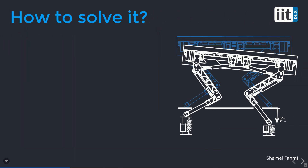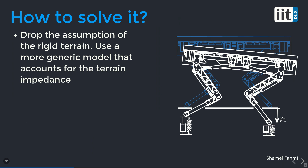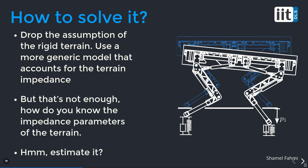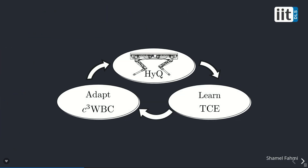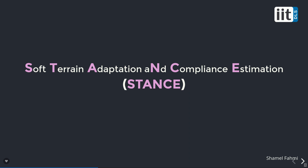So how do we solve these problems? First, we drop the assumption of rigid terrain and use a more generic model that can handle both rigid and soft terrain. But if we do that, we need to perceive the terrain parameters — we need to tell the robot which type of terrain it is walking over. So we estimate the terrain impedance parameters. We reformulate our standard whole body controller to account for a more generic contact model. This new whole body controller requires knowledge of the terrain impedance, fed back by the terrain compliance estimator, and we do this iteratively at every control loop. We call this approach STANCE, which stands for Soft Terrain Adaptation and Compliance Estimation.